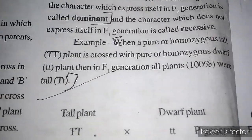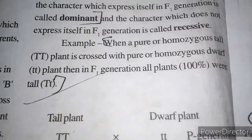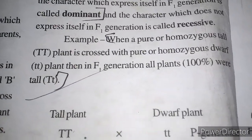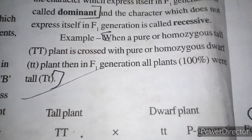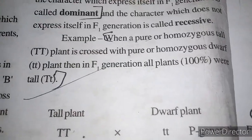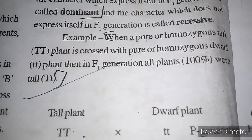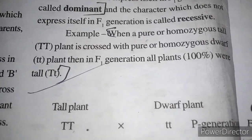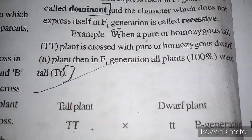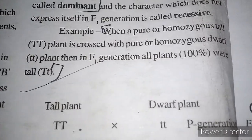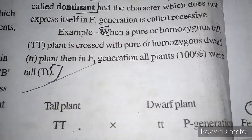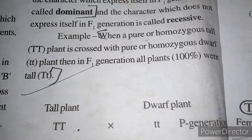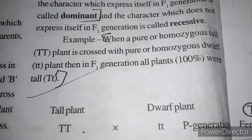Here is an example to help you understand. A pure homozygous tall plant (TT) is crossed with a pure homozygous dwarf plant (tt). In the F1 generation, all the plants were tall.